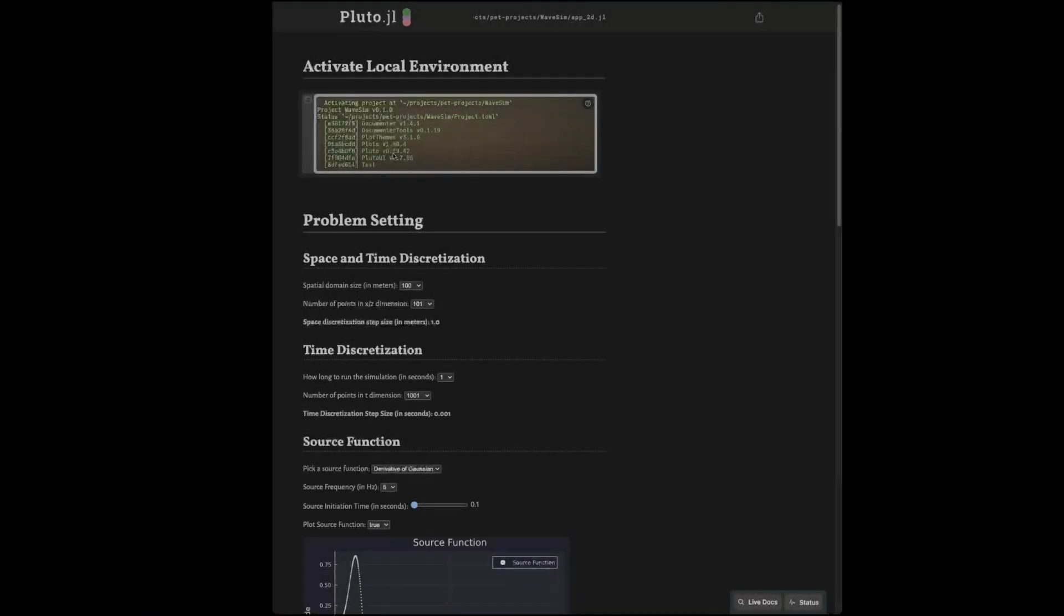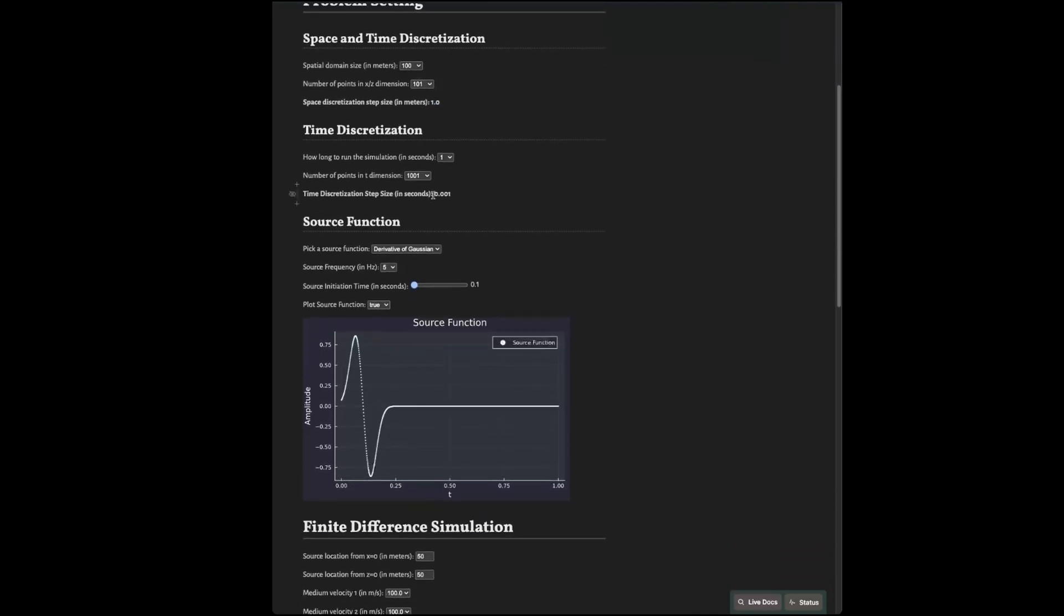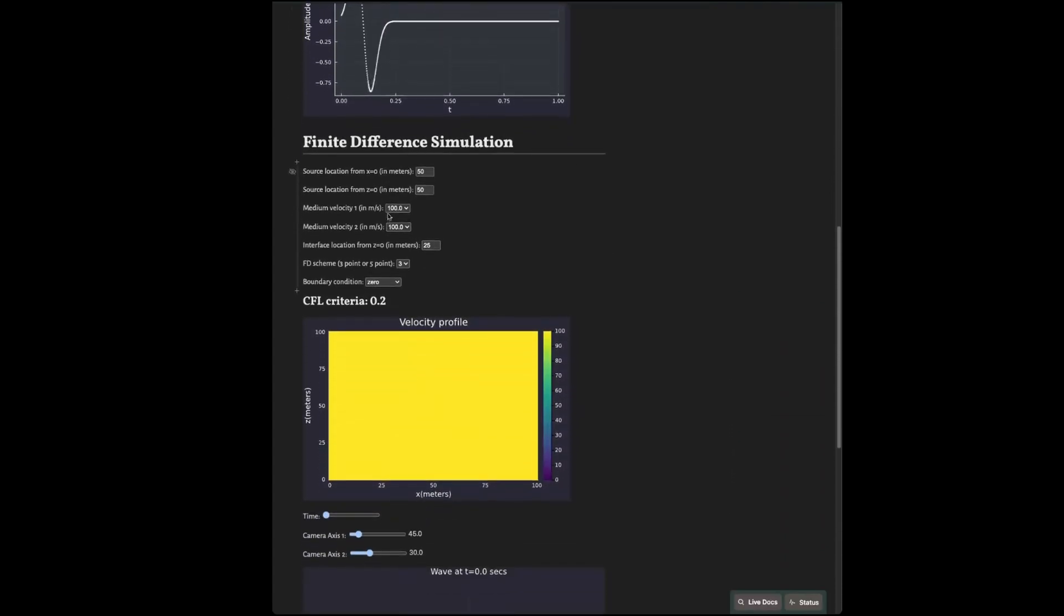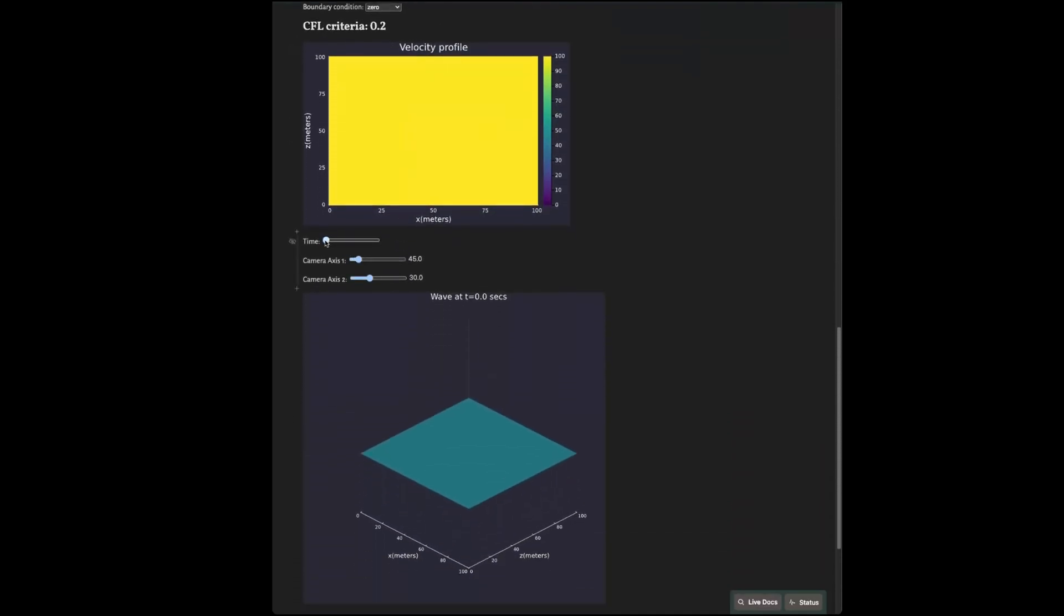Alright, let's run a few cases and visualize 2D waves. Starting with the basic setting like 1 meter spacing in x and z dimensions, 0.01 second step size in time, source with a dominant frequency of 5 and a homogeneous medium with 100 meters per second velocity. The simulation looks fine with waves reflecting off the boundaries as expected.